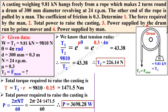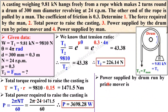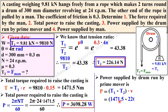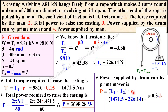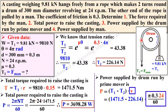The third objective is the power supplied by the drum run by the prime mover. The equation is P = (T1 − T2) × V, and this represents the power supplied by the drum. We have T1 and T2, so we substitute both values. For velocity, we use V = πDN / 60, where D = 0.3 m is the drum diameter and N = 24 rpm.